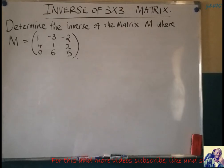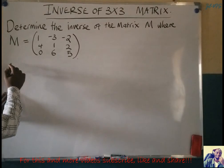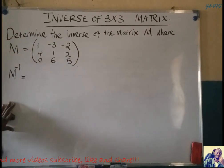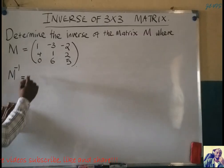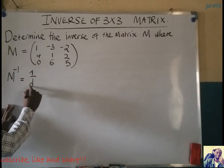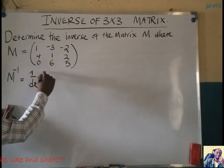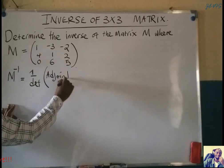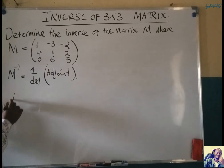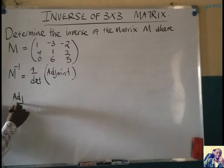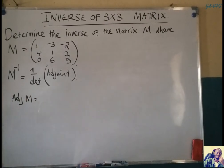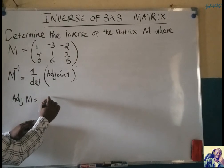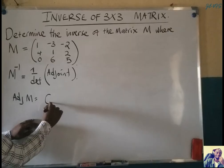The inverse of the matrix M, sometimes denoted as M to the power negative 1 or just M inverse, is equal to 1 over the determinant multiplied by the adjoint matrix. This adjoint matrix — adjoint of M — is equal to the transpose of the matrix of cofactors of M.